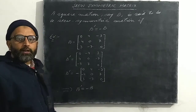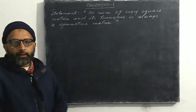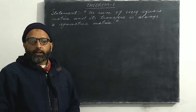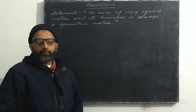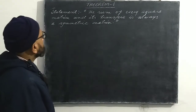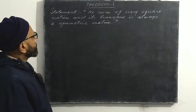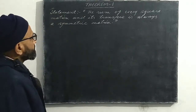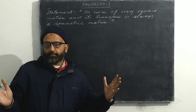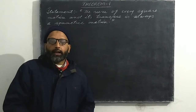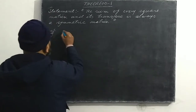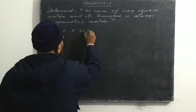Now there are three theorems based on the concepts of symmetric and skew symmetric matrices. These three theorems are very important as they are very frequently used in the study of matrices. The first theorem states: the sum of every square matrix and its transpose is always a symmetric matrix. That means if we add a square matrix and its transpose, the result is always a symmetric matrix. We are going to prove this.